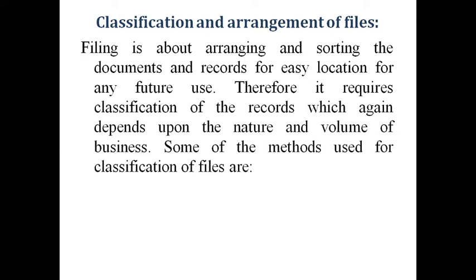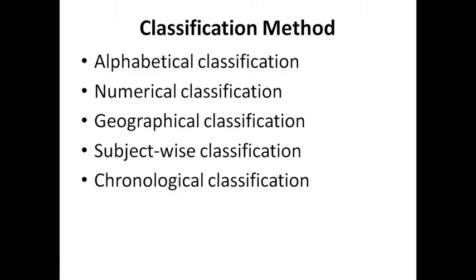Some of the methods used for classification of files are: alphabetical classification, numerical classification, geographical classification, subject-wise classification, and chronological classification. These are the most common classification methods. Besides these, there are a number of other methods, but in this tutorial I am going to discuss particularly these five classification methods.